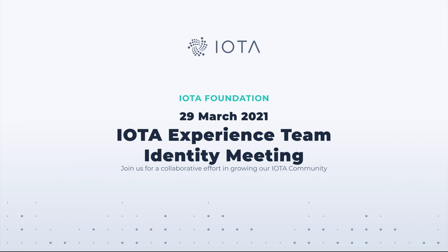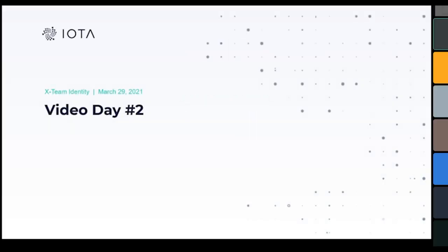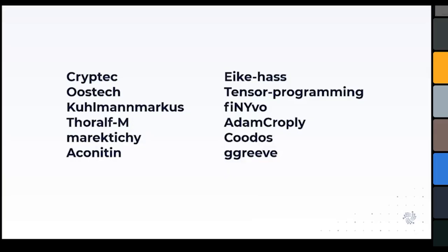Welcome to our second video day. Today is March 29. I will make a quick introduction, and then our speaker today is Jelle Milner from IF, who is going to present the latest detailed roadmap for the identity ecosystem of IOTA. We are now 12 XTM identity members, which is nice growth — we've been around for about two months now.